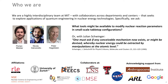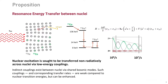One key topic is what Peter Hagelstein has worked on for many years: what tools might be available to modify nuclear reaction parameters in small-scale configurations rather than through large particle accelerators. As Julian Schwinger expressed, one must ask if any conceivable mechanism now exists whereby nuclear energy could be extracted by manipulations at the atomic level. We believe resonance energy transfer between nuclei may be a mechanism that fits that bill.